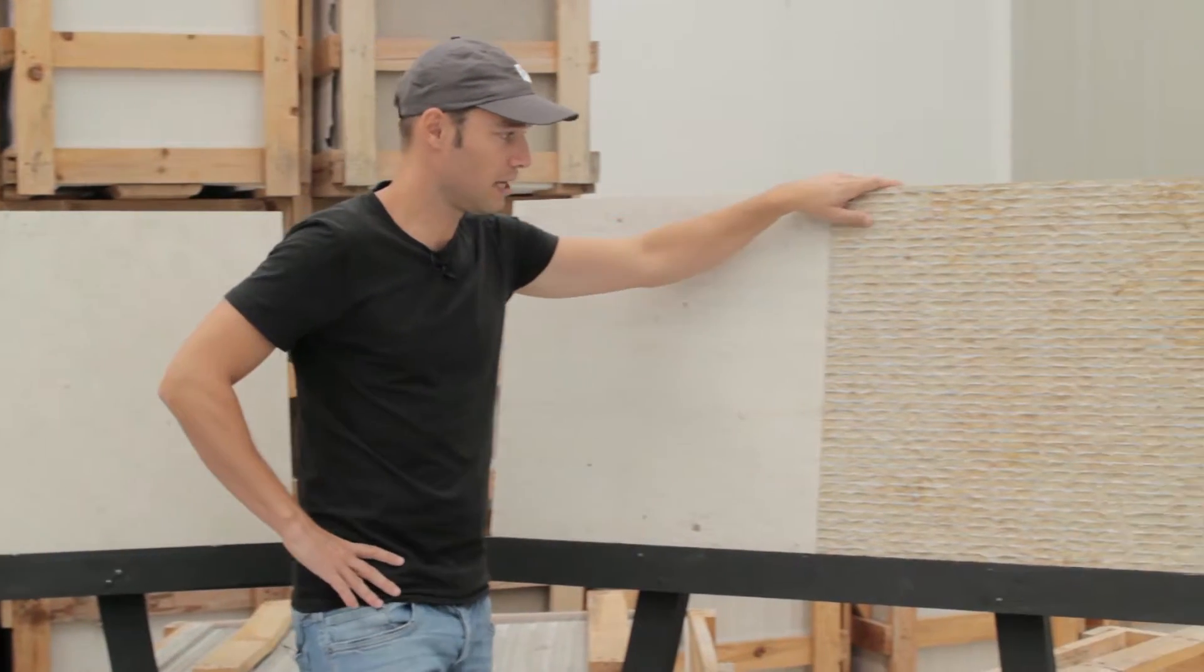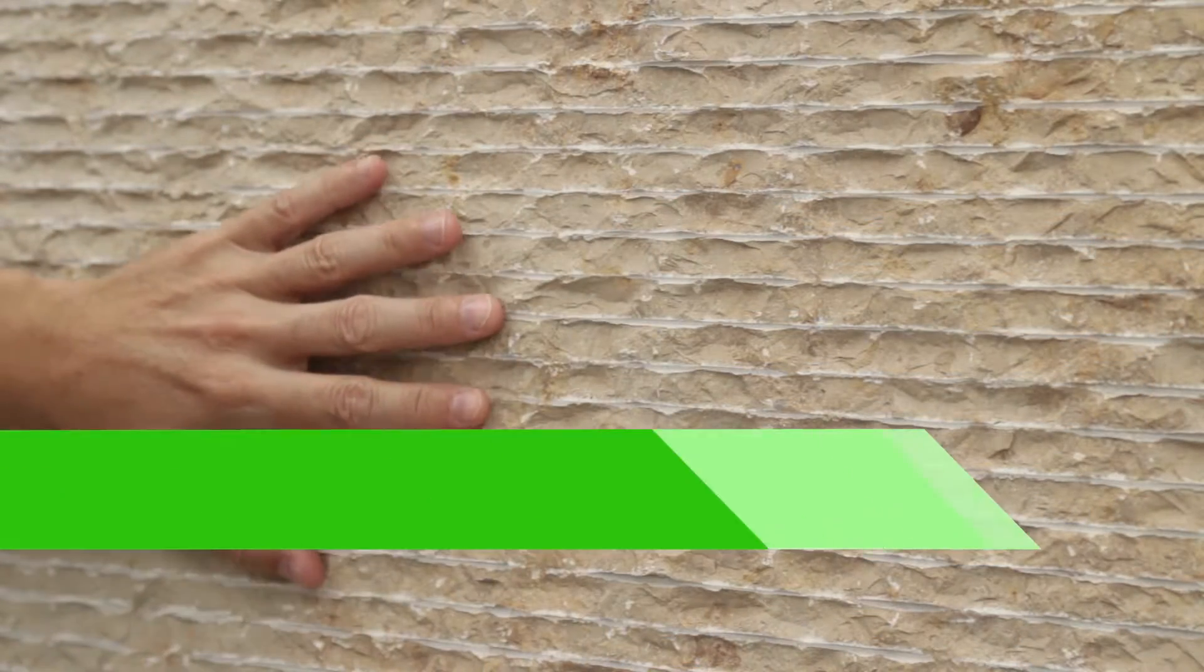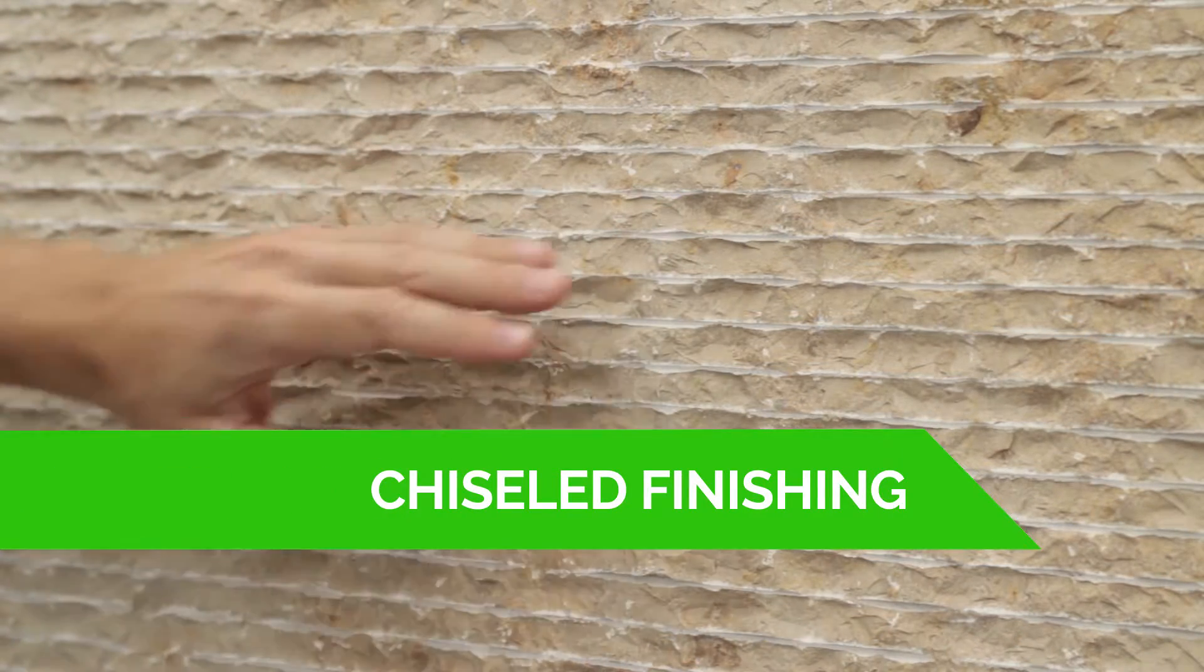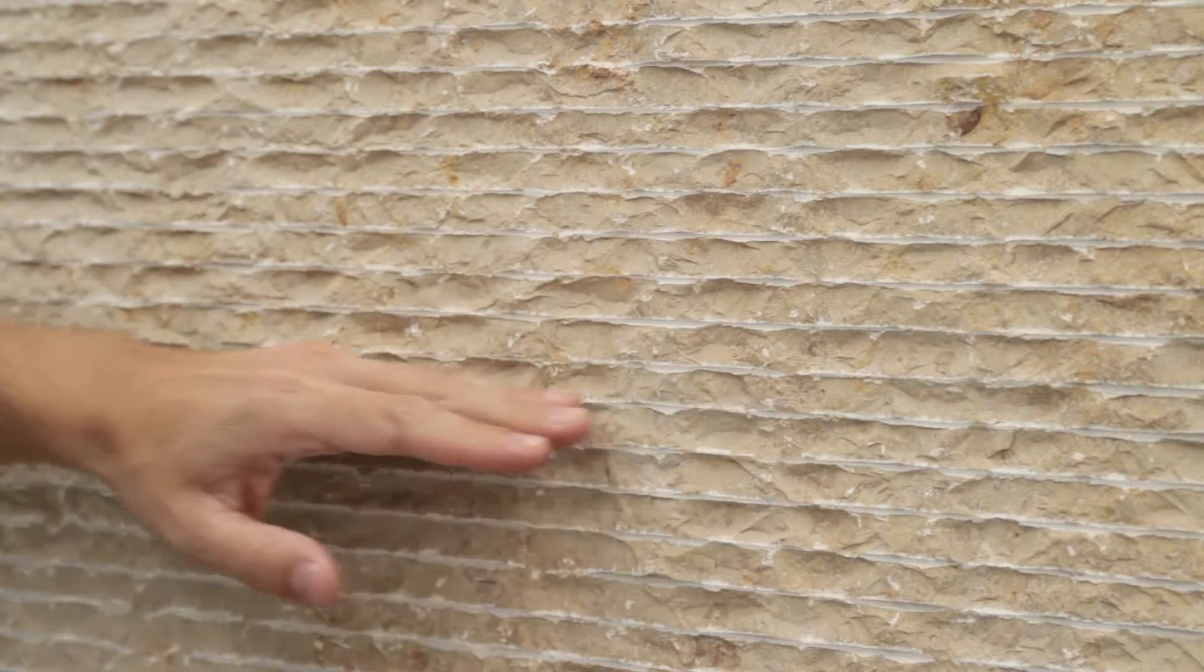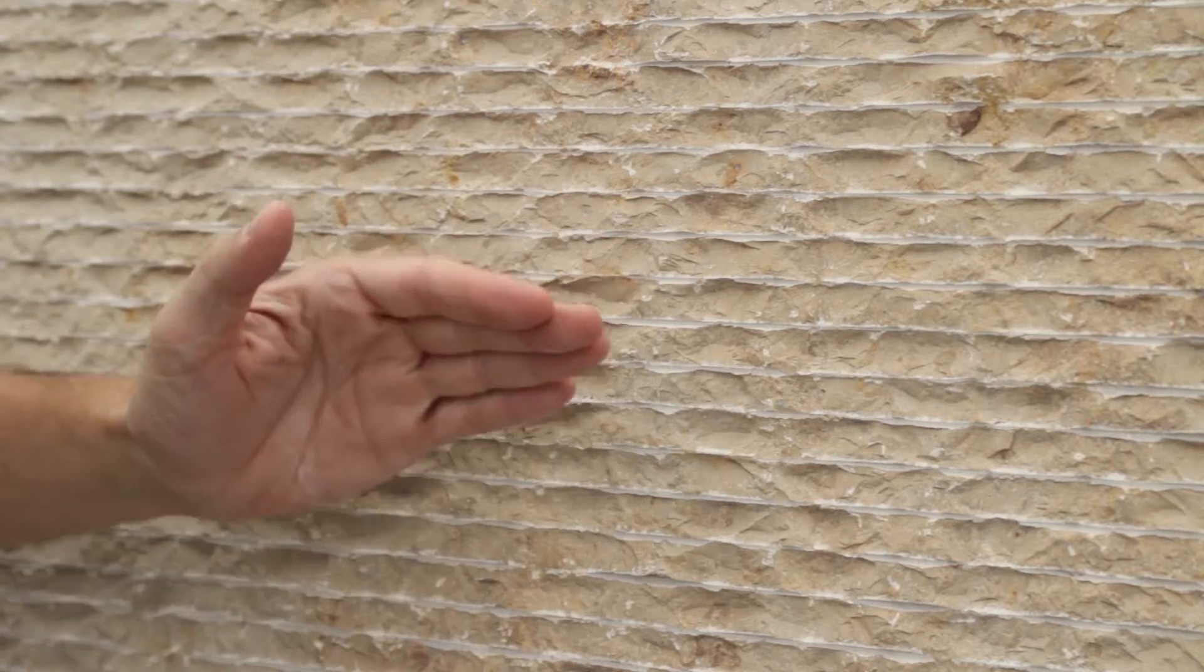The first finishing we'd like to talk about for exterior cladding is the chiseled. So essentially what you do, you do several parallel cuts on the surface and then you cut. You break the edge, the top of the stone, and you get this kind of appearance.